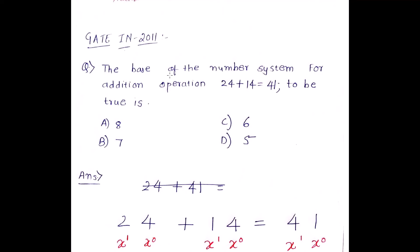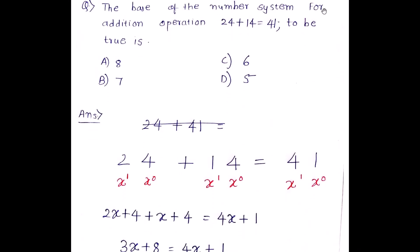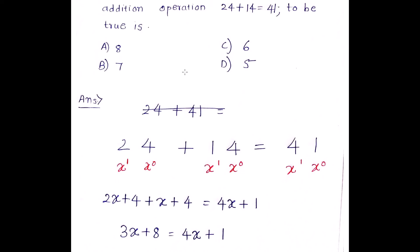Let's solve a GATE 2011 problem and apply what we've learned. The question asks: for what base is the addition 24 + 14 = 41 true? In decimal, 24 + 14 = 38, but here we're getting 41, so we need to find which number system makes this true. It's clearly not decimal. It could be octal if the base is 8, or some other system.